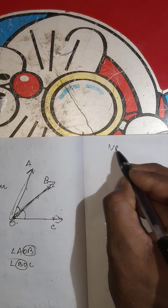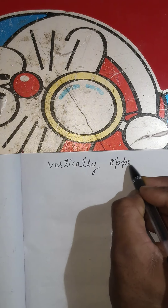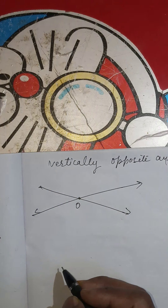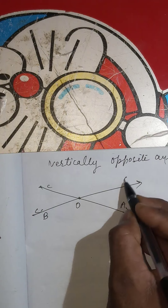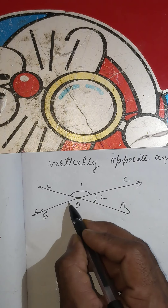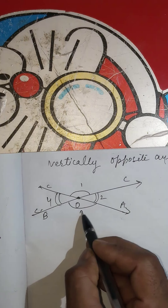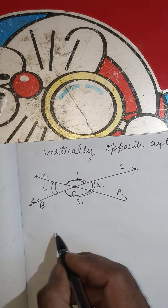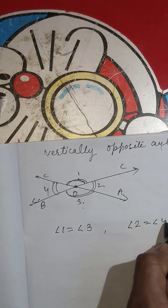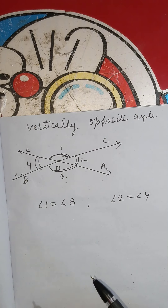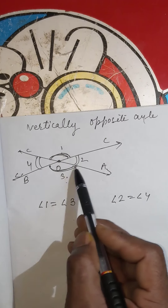Now the vertically opposite angles. When two lines intersect each other at a point O, four angles are formed — angle 1, angle 2, angle 3, and angle 4. The pair of angles lying on opposite sides are vertically opposite angles. Angle 1 is opposite to angle 3, and angle 2 is opposite to angle 4. Vertically opposite angles are always equal to each other.